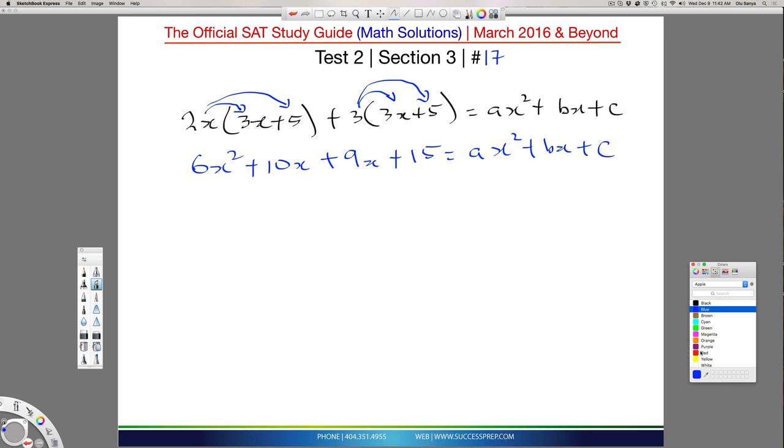So based on what we said earlier, all the types should equal to each other. Now, in this case, the question is only asking us for B. So I know B is attached to x, so like right there.